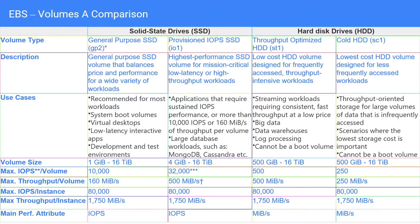The second measure is throughput — how much data you can transfer from the system to the disk. So you have IOPS on one hand and throughput on the other. Some volumes have IOPS as their main performance criteria and others have throughput. That depends on your use case: whether you focus more on the number of transactions or on the data you can transfer as your primary criteria.